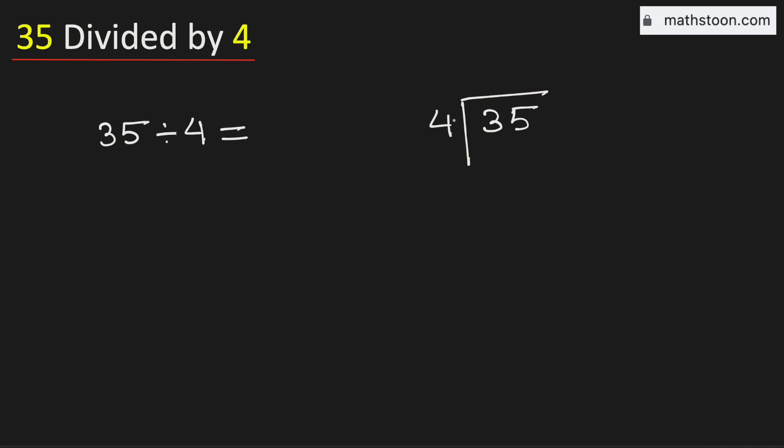We know that 4 times 8 is 32 and 32 is closer to 35. Subtract we get 3.